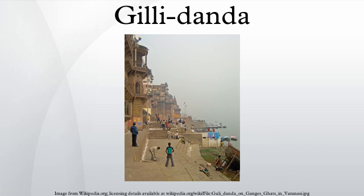Ghillie dander is played with two pieces of equipment: a dander, being a long wooden stick, and a ghillie, a small oval-shaped piece of wood. Standing in a small circle, the player balances the ghillie on a stone in an inclined manner, with one end of the ghillie touching the ground while the other end is in the air.